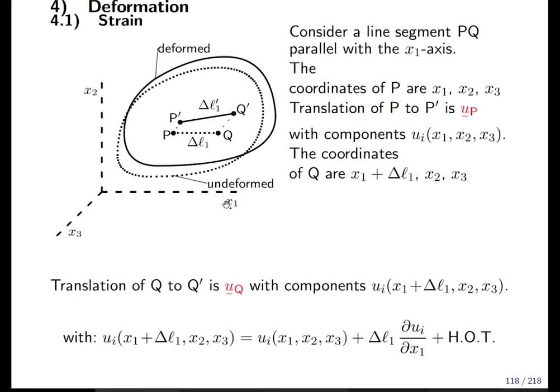And equivalently we have a u_Q vector which points from point Q to Q prime. Points P and Q are distant by Δl₁. When we deform the object, dotted line is undeformed, solid line is deformed shape. When we deform the object, then point P will move, point Q will move, and they will also move relative to each other.